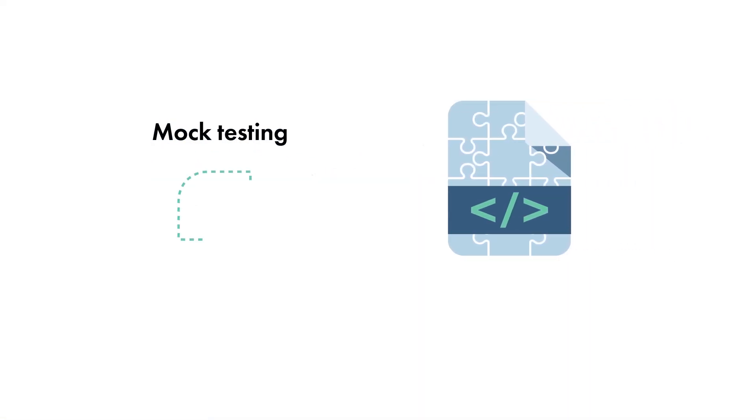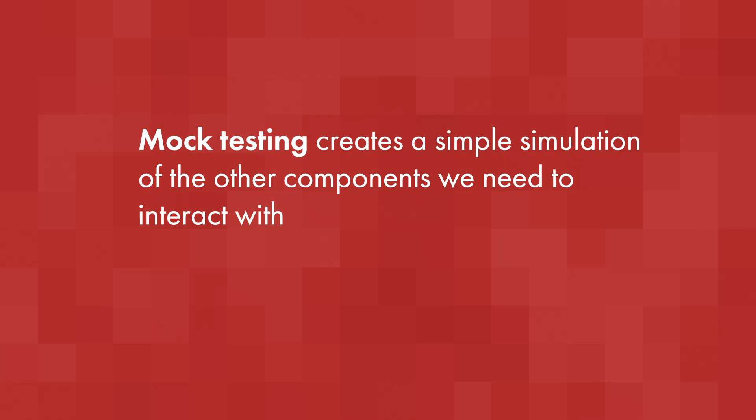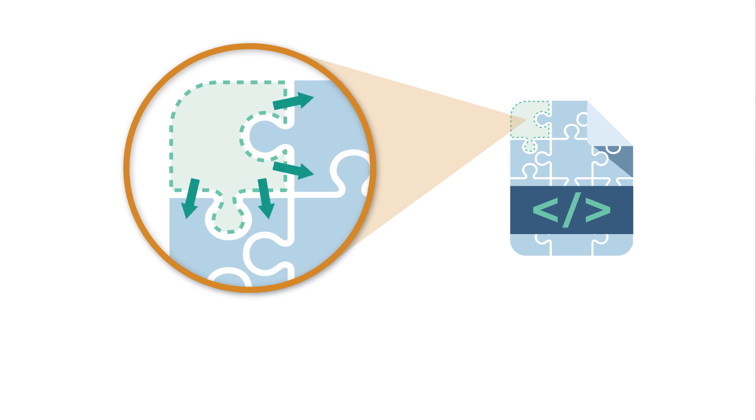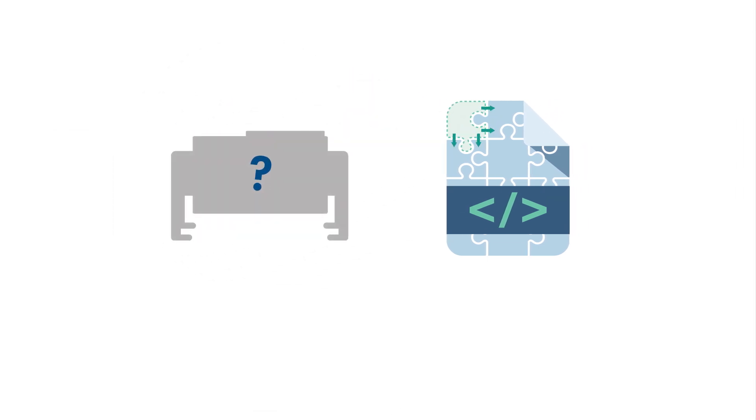Mocking is not a type of testing on its own. Instead, it's a mechanism to more easily test your component in isolation, despite your component requiring other dependencies. Mocking creates a simple simulation of the other components we need to interact with. An example could involve interacting with hardware, such as a data logger, when the real hardware isn't available. Prior to the test, we would create a software object that receives commands and returns representative data in a similar way to a real data logger. Then, if the real data logger isn't available, we can still run tests that need to interact with it. Note that we don't need to build a high-fidelity simulation — we only need enough functionality to test our interactions with it. Testing with mocked components helps isolate and test specific parts of the system without relying on the actual components, thus making errors easier to isolate.